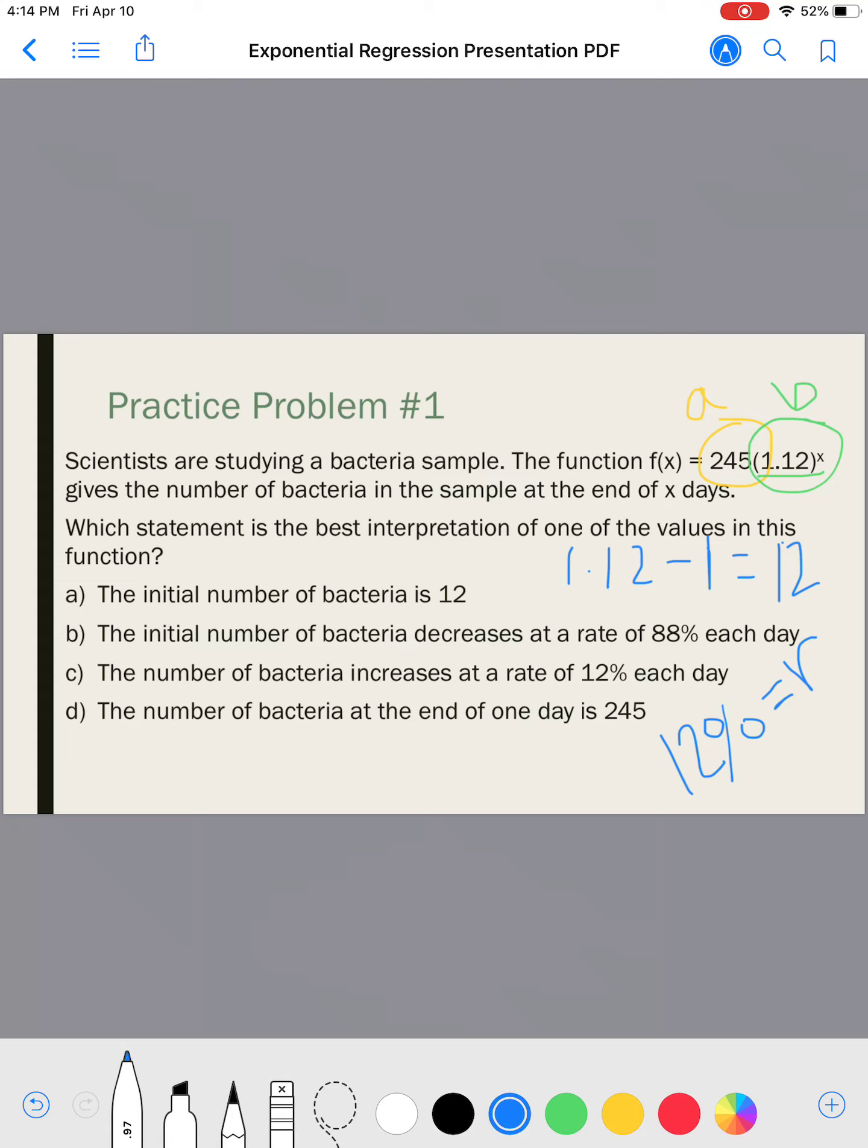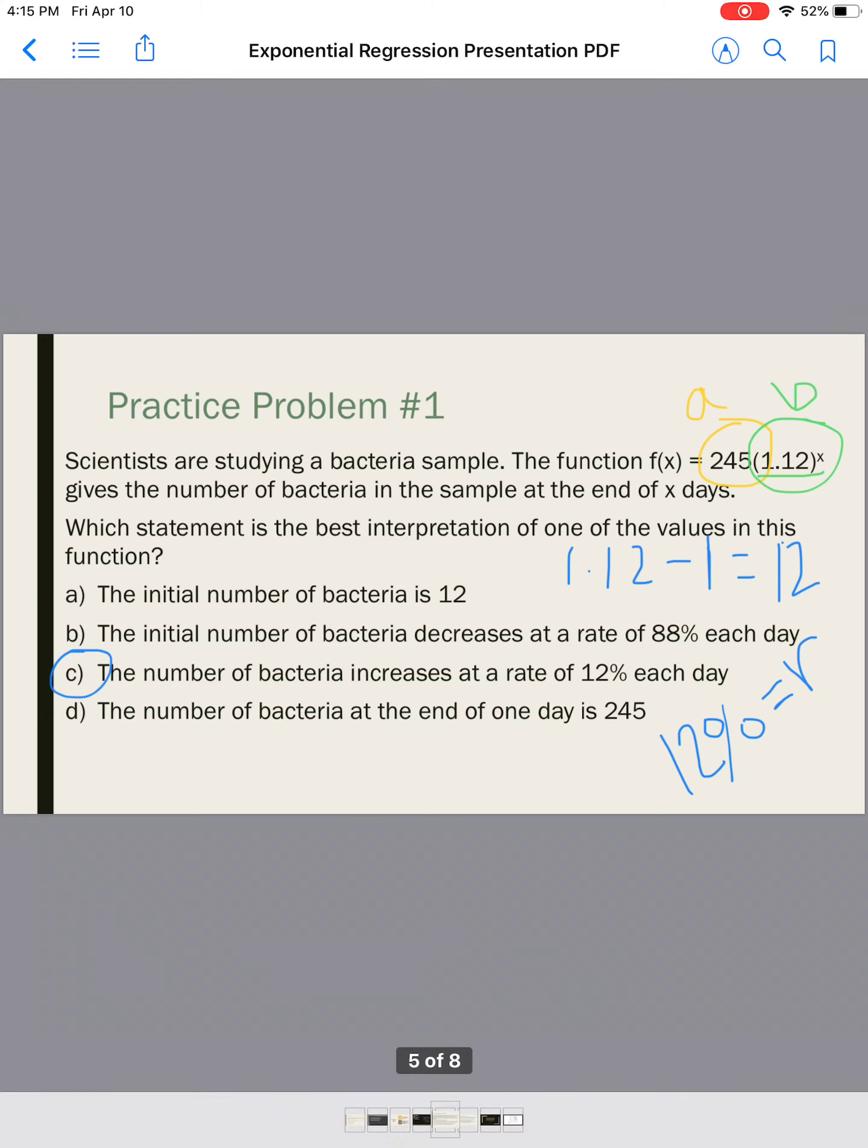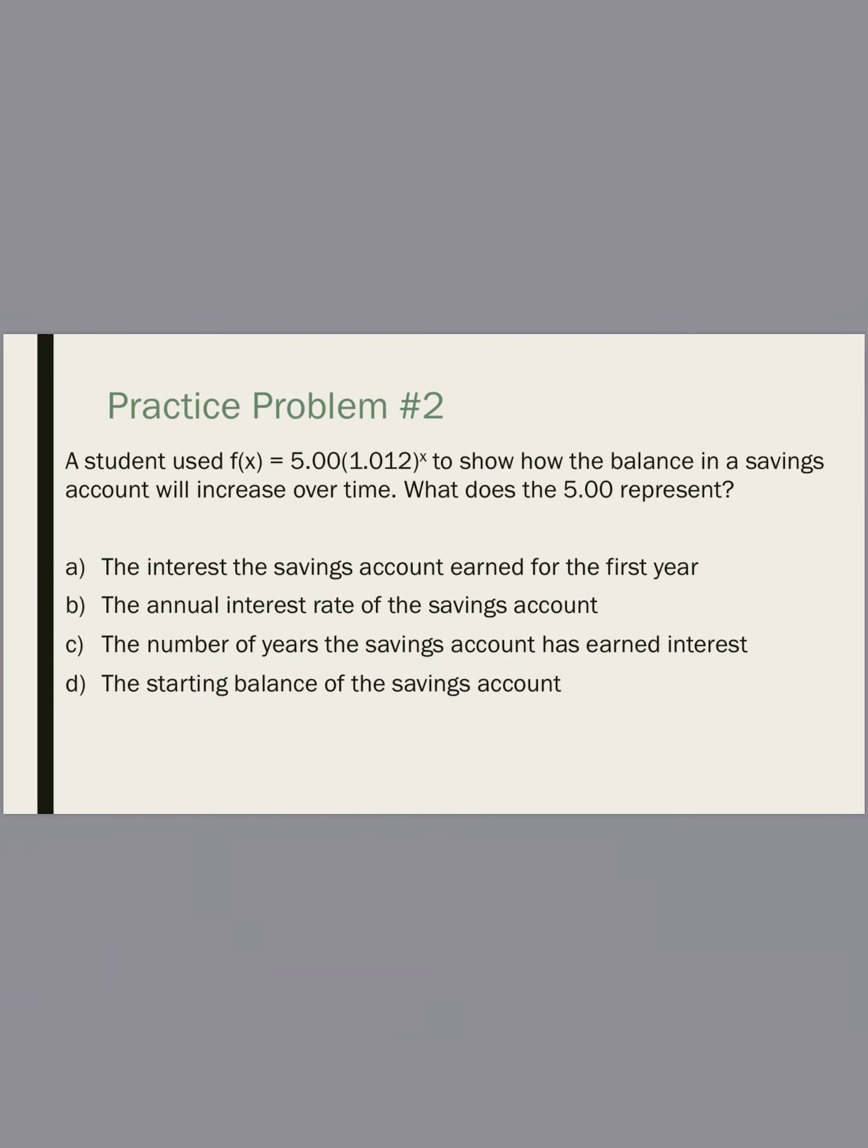D, the number of bacteria at the end of one day is 245. No, the number of bacteria that it started with before a day even occurred was 245. After one day, I have to take into account that 12% increase. So, my answer here would be C. All right, on the next one, try to pause the video and see if you can get the answers before I tell them.